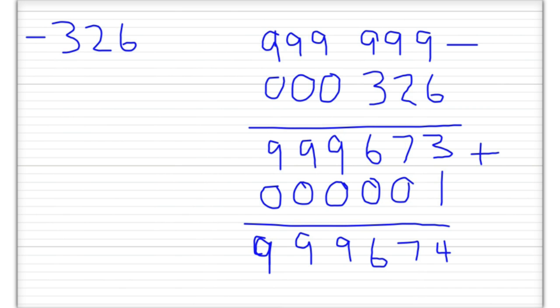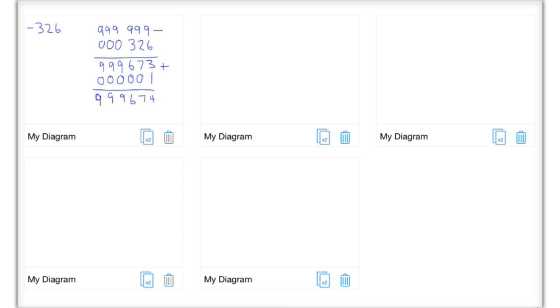That covers nines and tens complements in the decimal system. Now we're going to look at how to represent positive and negative numbers in the binary system. We can use the same scheme by imagining an odometer with ones and zeros — using ones and twos complements. We calculate the ones complement by subtracting each digit from one, and a shortcut is to just swap the ones and zeros.